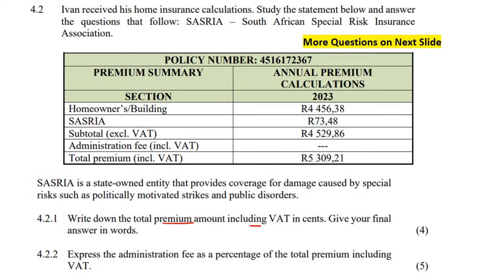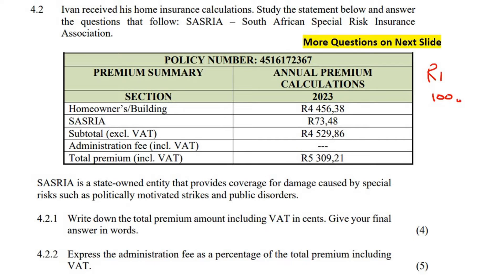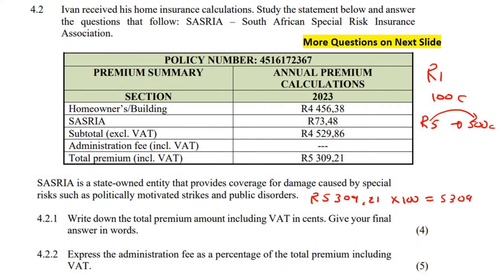Write down the total premium amount, including VAT, in cents. So here's the total premium amount — it already includes VAT. They're just asking us to change this to cents. So 5309.21 — we know that 1 rand equals 100 cents, and 5 rand equals 500 cents. So to go from rand to cents, you multiply by 100. So 5309.21 multiplied by 100 gives us 530921 cents.